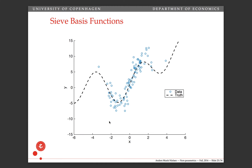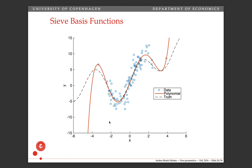Here's the same data generating process as before. Here's what happens if we try to approximate this with a polynomial. One thing you can notice is that we are very often fitting the very last observation with a polynomial, because once we get outside the region of support, a polynomial diverges — it goes to minus or plus infinity. So it typically goes through the most extreme observations, and those are going to really punish a cross-validation criterion.